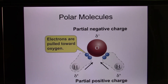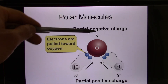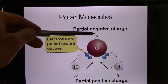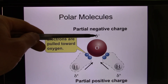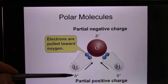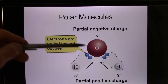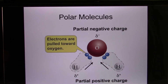Water is a polar molecule. It's not completely negative, so we use the Greek symbol delta (δ) to mean 'partially.' The oxygen side is δ− (partially negative) and the hydrogen side is δ+ (partially positive). This is a polar covalent bond, and water is a polar molecule.